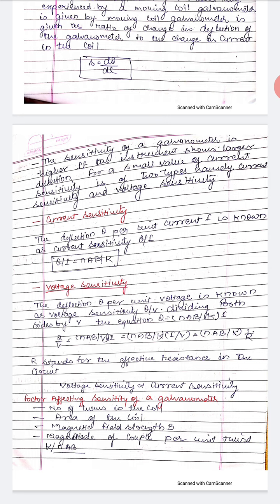Voltage sensitivity is the deflection θ per unit voltage v, i.e., θ/v = NAB/(kv) = NAB/(k × i) × (1/R), where R is the effective resistance in the circuit. So voltage sensitivity is directly proportional to current sensitivity. The factors affecting sensitivity are: number of turns N, area of the coil A, magnetic field strength B, and magnitude of the couple per unit twist k.